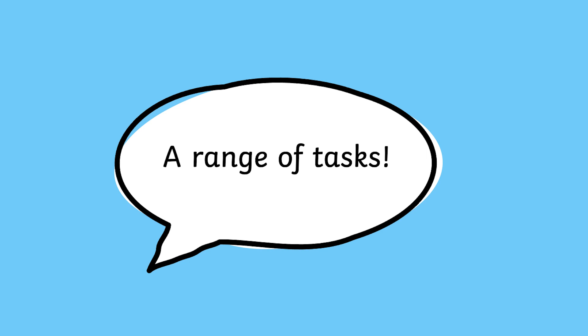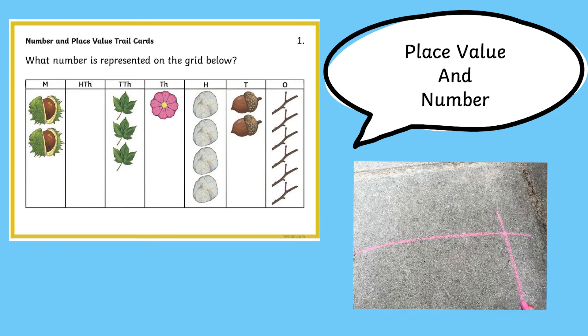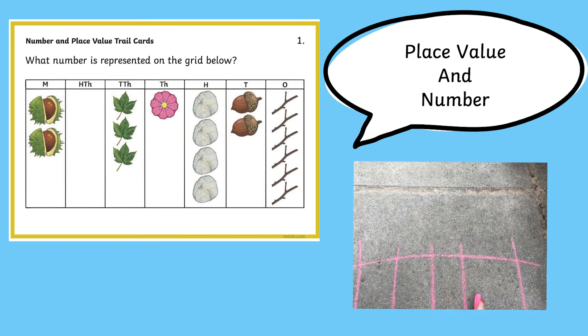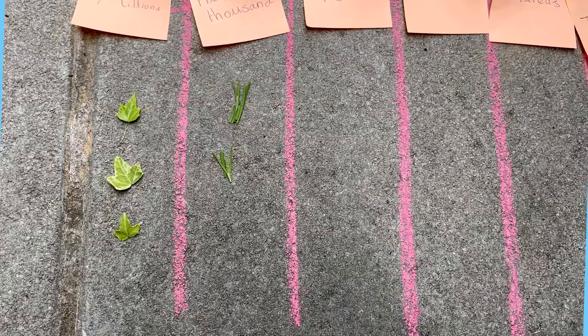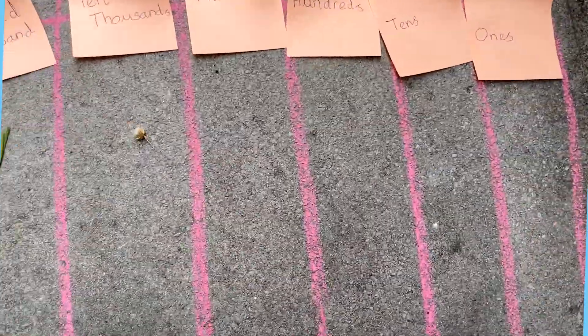Our resources offer a range of tasks to try out with your children. For example, place value and number. You can use different materials outside to represent different numbers using natural materials and then ask your children whether they can read the number.